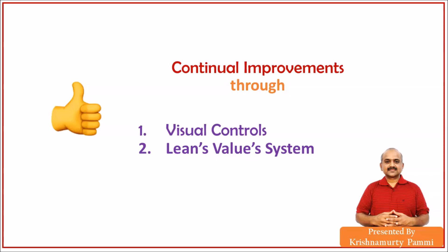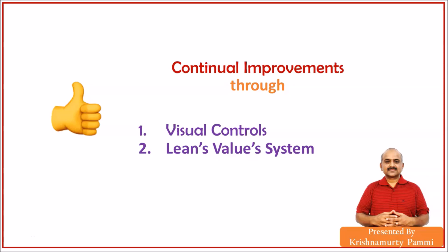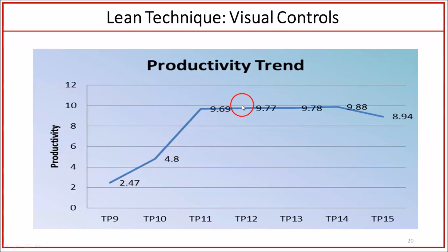These continual improvements — whatever we gain from test pass to test pass — we wanted to sustain using visual controls. These visual controls are available in front of the team in visible places, showing how productivity is increasing from test pass to test pass. Test pass 9, test pass 10, test pass 11 — from one to the next, you can see overall productivity increasing. This brings uniformity in team thinking.